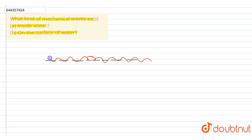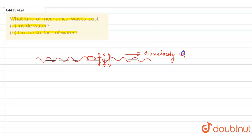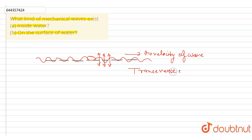If we observe from outside the water, the particle will oscillate in this manner. This is the motion of the surface particle, and the velocity of the wave is in this direction. When particle motion is perpendicular to the velocity of the wave, that type of wave is called a transverse wave.